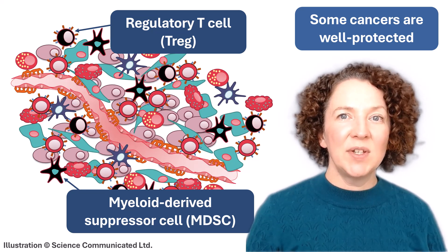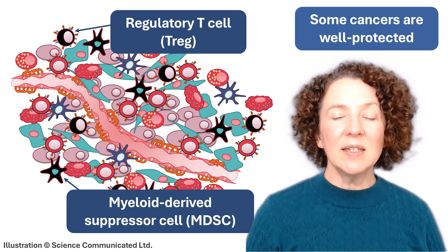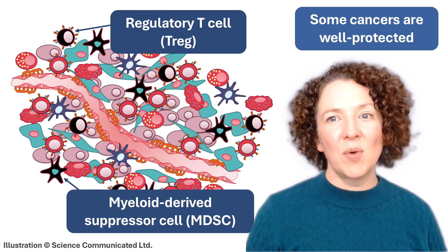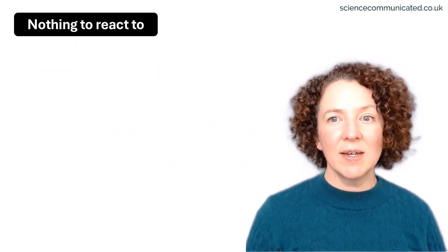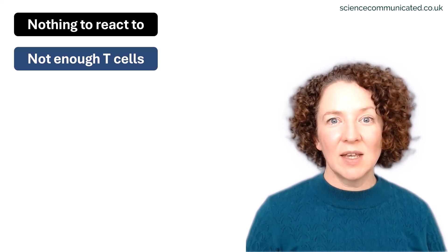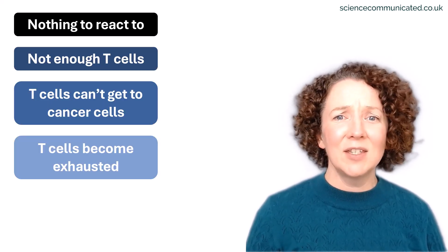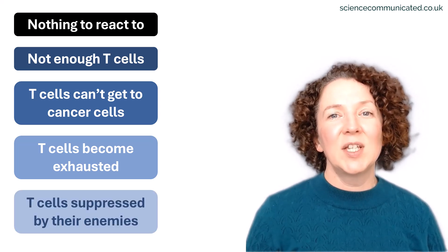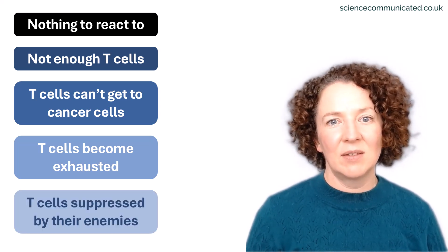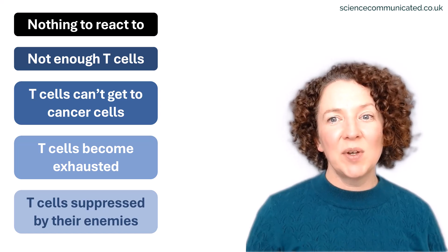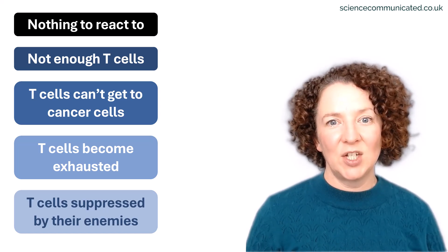So even if a checkpoint inhibitor gives a boost to the T cells, the treatment might not work. There may be no neoantigens for the T cells to recognise, or not enough T cells, or the T cells can't get to where they're needed, or they become suppressed or exhausted by their enemies — the regulatory T cells and the myeloid-derived suppressor cells. This is why checkpoint inhibitors only help a relatively small proportion of patients.